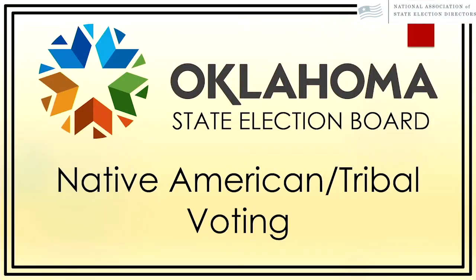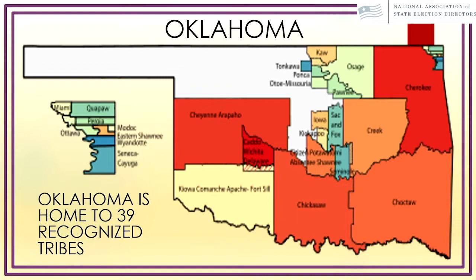Thank you for having me. I appreciate being able to present and tell our little story from Cherokee County, Oklahoma. As you can see on the map, Oklahoma has 39 recognized tribes in the state. We'll focus on the Cherokee Nation, which is in the northeast section of the state. The jurisdiction for the Cherokee Nation covers 14 counties. Oklahoma does not have reservations but has tribal jurisdictions, and within those there is designated tribal land.